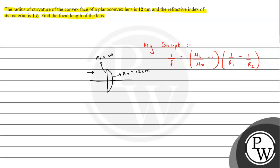The refractive index is given as 1.5, so we can write μ_l as 1.5. Now we have to substitute the values to get the final result. By lens maker formula, 1/f equals...